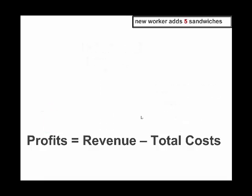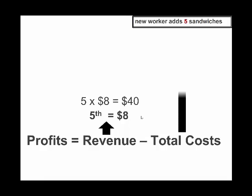But what if that worker only gave you 5 sandwiches and not 50? Perhaps your kitchen was already pretty full of cooks, and adding one more cook is not going to make much difference. Now your revenue won't increase by a lot — you sell 5 sandwiches at $8 and make $40. Per sandwich, the 5th sandwich gives you $8 of extra revenue. But your extra costs are quite a bit, because you pay that worker $80 and they only gave you 5 sandwiches. So on a per-sandwich basis, the 5th extra sandwich costs you $16. Clearly, your extra sandwiches are more expensive than your extra revenue, so your profits will go down.